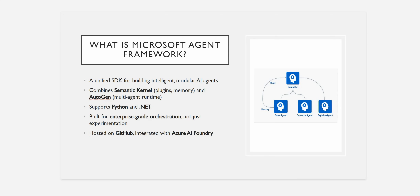It is the combination of Semantic Kernel and AutoGen, getting the best features from both. If you're new to AutoGen, it lets you define multiple agents where each agent has a specific role, and this framework orchestrates all of those agents together so they can work seamlessly. As for Semantic Kernel, I have a full playlist explaining everything about it — what it is, how to get started, plugins, memory, external API calls. In a nutshell, Microsoft Agent Framework is Semantic Kernel plus AutoGen.